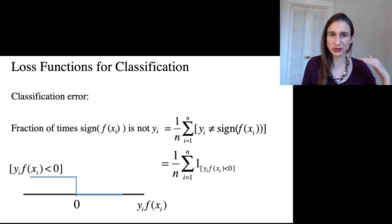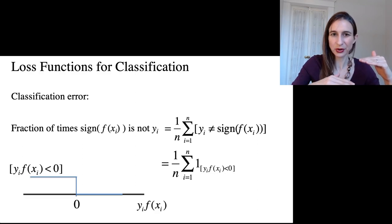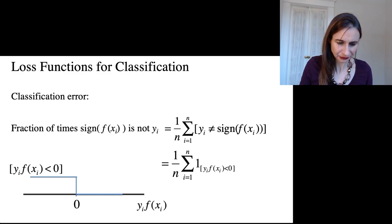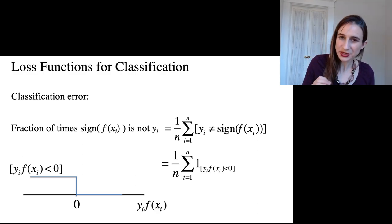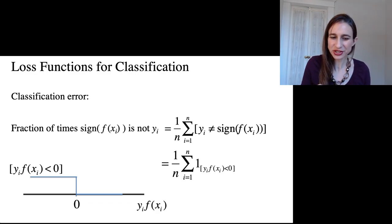So if y times f is negative, I lose a point. The function is 1 if y times f is less than 0, and it's 0 otherwise. So that's my loss function as a function of the margin. And I will tell you that in most machine learning algorithms, it's not just less than 0, it's actually less than or equal to 0. So you even lose a point if y times f is 0.